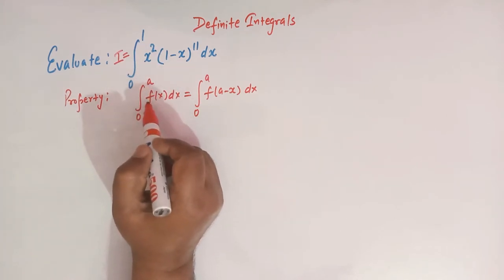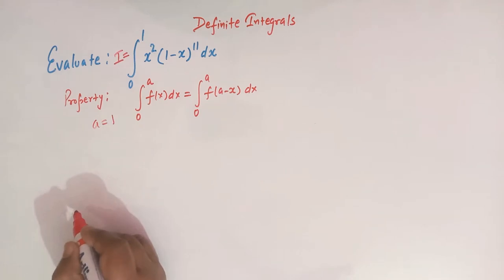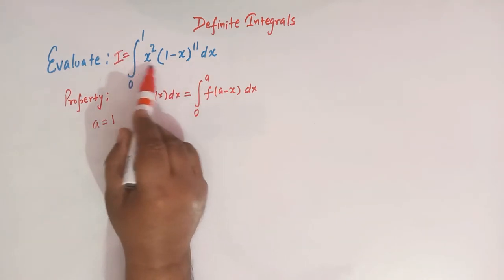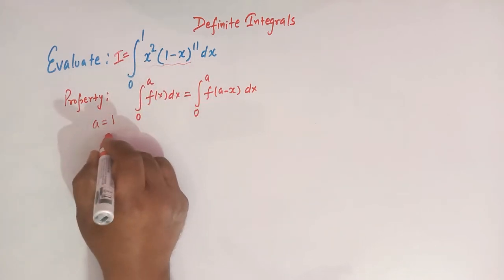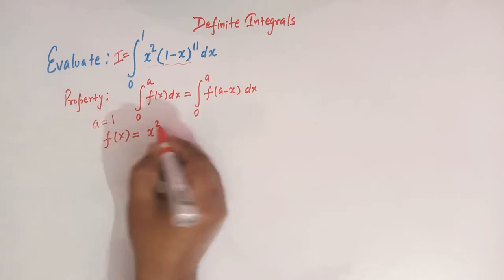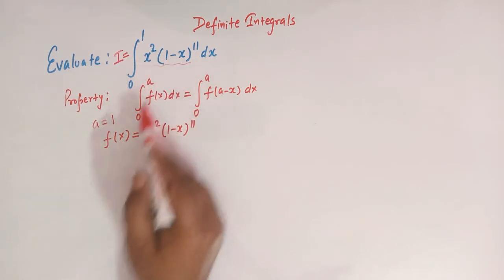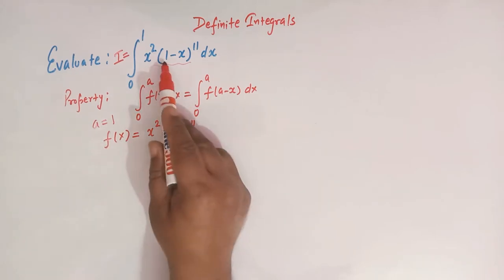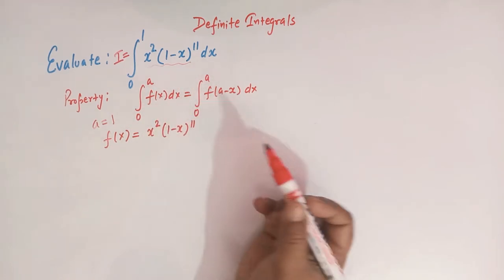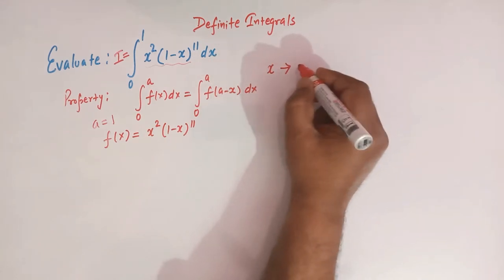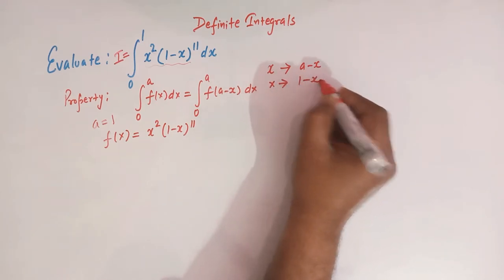Comparing this integral with the property, we see that the value of a is 1. Now we assume that f(x) is equal to x squared times (1 minus x) raised to 11. In the next step, we have to replace x by a minus x, which means x is to be replaced by 1 minus x.